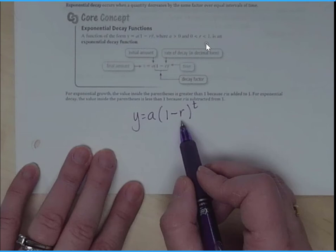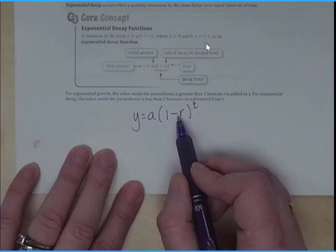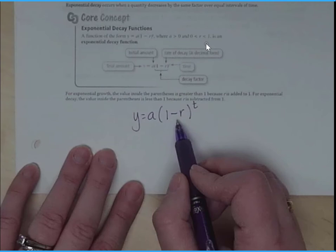If things didn't change over time, it would be 100% every year. So if we had 80,000 people and the population never changed, it would be 100% of that population every year. Now here we have a decay, which means we're going to subtract.